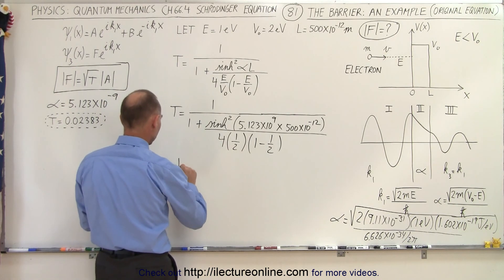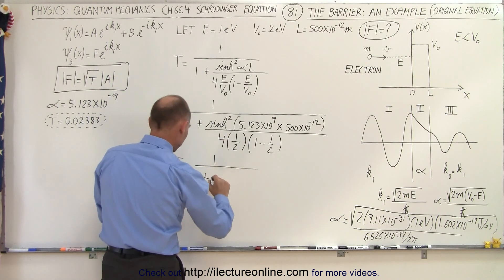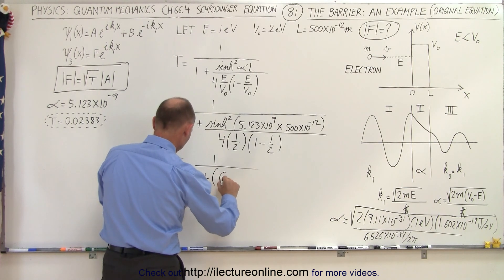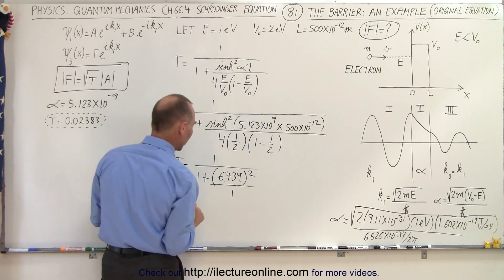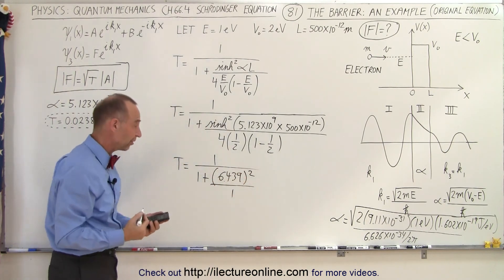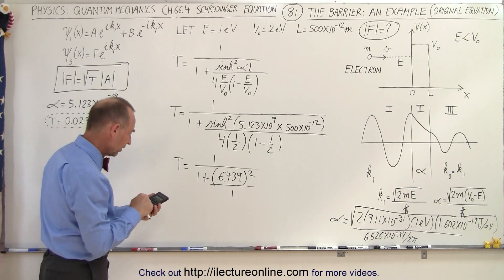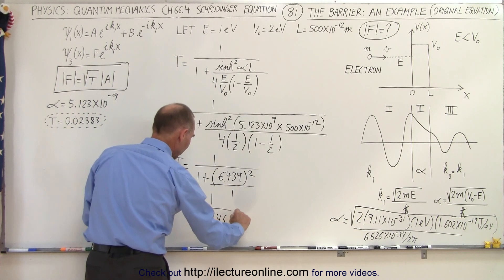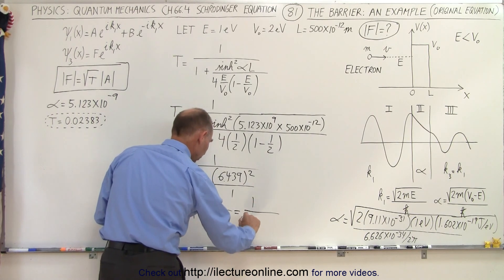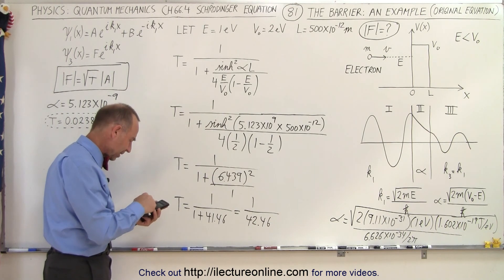This becomes T is equal to one divided by 1 plus the hyperbolic sine squared of 6.439 squared. So let's square that number and add 1 to that, so that would be T is equal to 1 over 1 plus 41.46 which is 1 over 42.46.